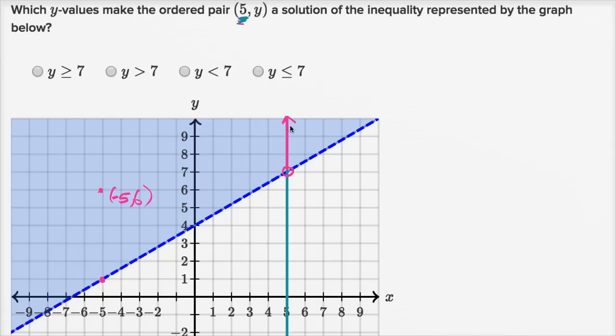So y is going to be greater than, y is going to be greater than 7, which is this choice right over there. If x is equal to 5, as long as y is greater than 7, we are going to be in the solution set.